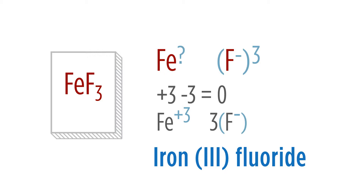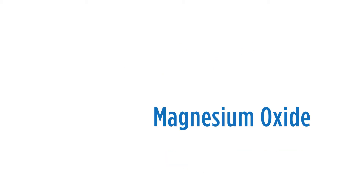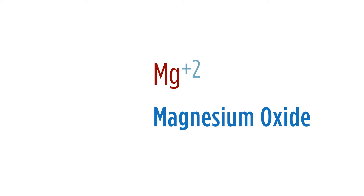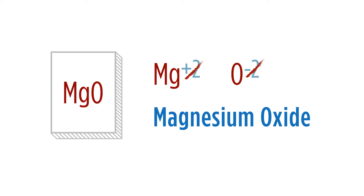Let's try a couple where we go from the name to the formula. Magnesium oxide: magnesium, Mg, is in group 2A, so it has a plus 2 charge. Oxygen has a negative 2. Balancing: plus 2 and negative 2 equals 0, so the formula is simply MgO.